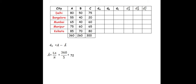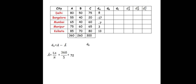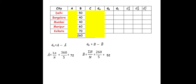So: 80 − 72 = 8, 55 − 72 = −17, 65 − 72 = −7, 75 − 72 = 3, 85 − 72 = 13. That gives us dA values. Next, dB = B − B̄. B̄ = summation of B / n = 260 / 5 = 52. So: 50 − 52 = −2, 40 − 52 = −12, 40 − 52 = −12, 60 − 52 = 8, 70 − 52 = 18. We have the dB values.